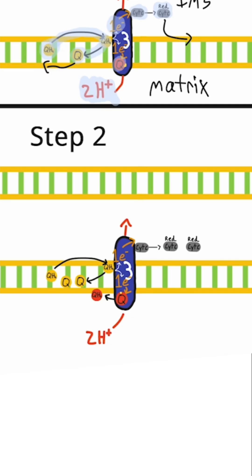Let's look at what happens in step 2. Here are the things that were made in step 1: the reduced cytochrome C, the ubiquinol that got oxidized to become ubiquinone, and then the halfway reduced coenzyme Q.